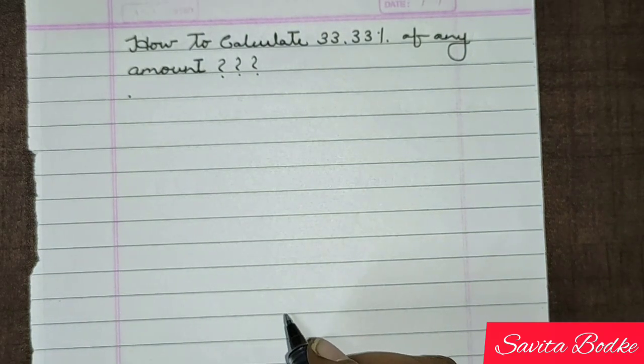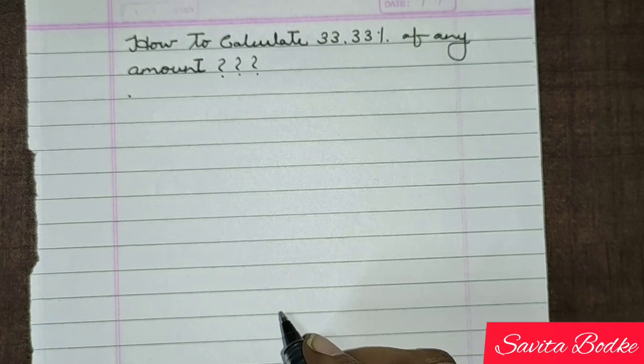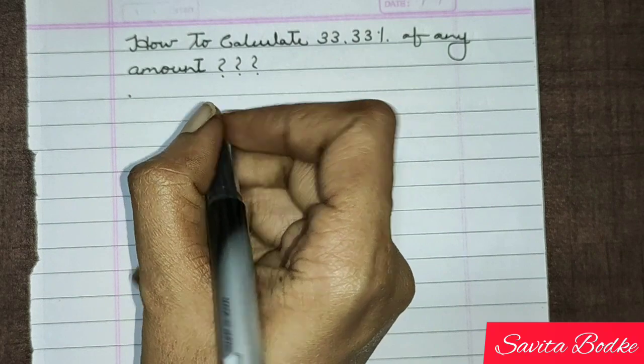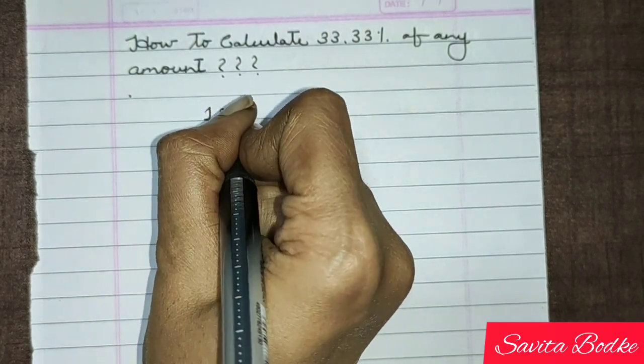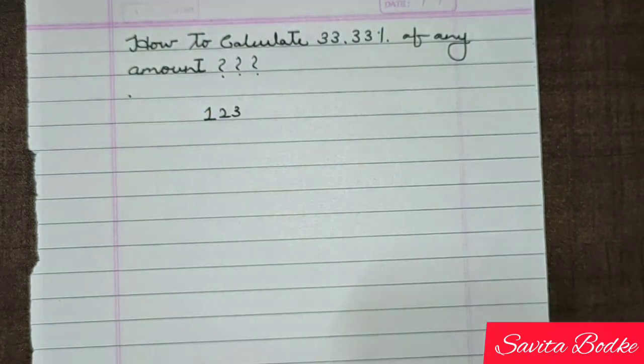It seems very difficult, but no, it's quite easy if you are going to apply this trick. Let's take one number. I'm taking 123. Now, if I want to calculate 33.33 percent of this amount within seconds, I can easily calculate. The amount is 41.